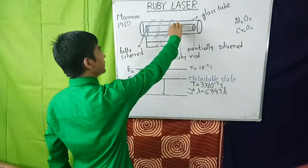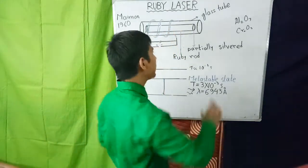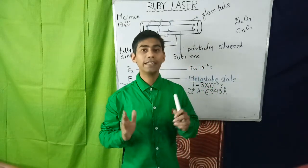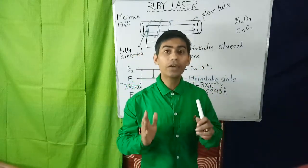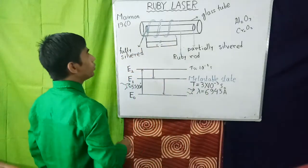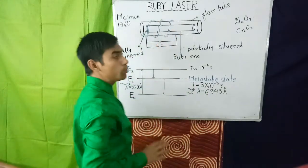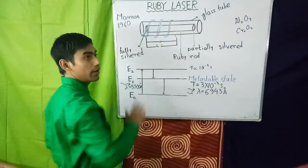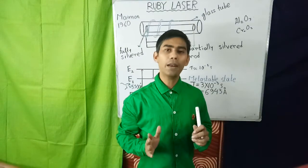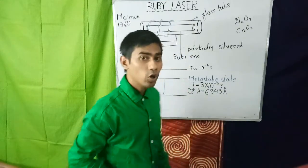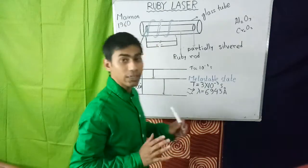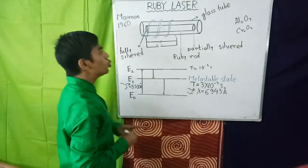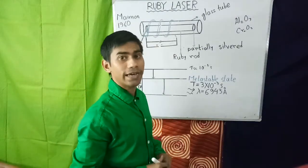The ruby rod is surrounded by a cylindrical glass tube through which a coolant liquid — water — is circulated to keep the rod cool. The cylindrical glass tube is surrounded by a helical xenon flash lamp to provide broadband optical pumping. Light of wavelength 5500 Angstrom is emitted from the flash lamp.